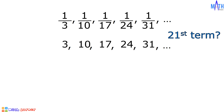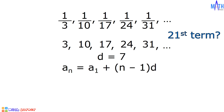The sequence 3, 10, 17, 24, 31, and so on is an example of an arithmetic sequence where the common difference is equal to 7. Let us solve for the 21st term of this arithmetic sequence by using the formula for finding the nth term: a sub n = a sub 1 + (n − 1) × d.